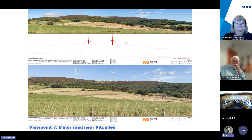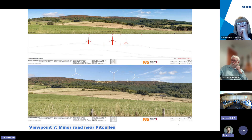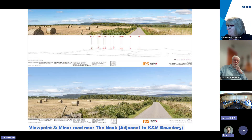Viewpoint seven is a minor road near Pitcollins, approximately 2.2 kilometers west of the development site or the nearest turbine. It is a key view for localized landscape impacts, with the scale of the turbines over the ridge line being the main feature. Slide 15 shows viewpoint eight.